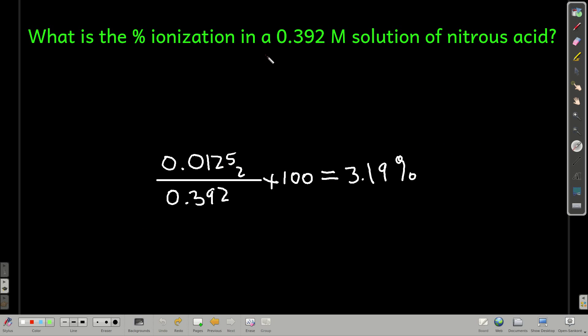So, let's go ahead and calculate the percent ionization for that problem we just did. So, a 0.392 molar solution of nitrous acid, we just calculated what the equilibrium concentration of the hydrogen ion was, 0.0125, divided that by the initial concentration of the acid, the nitrous acid times 100, 3.19%, that's the percent ionization.